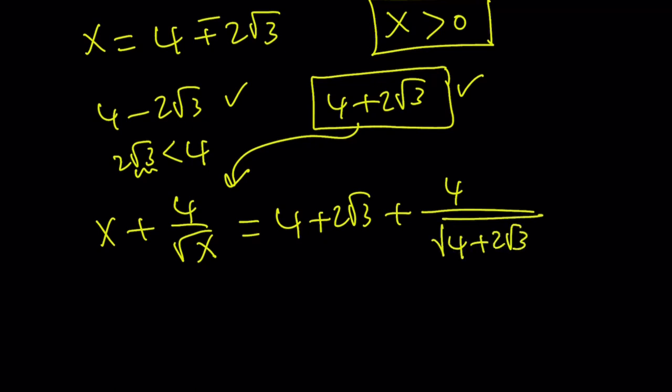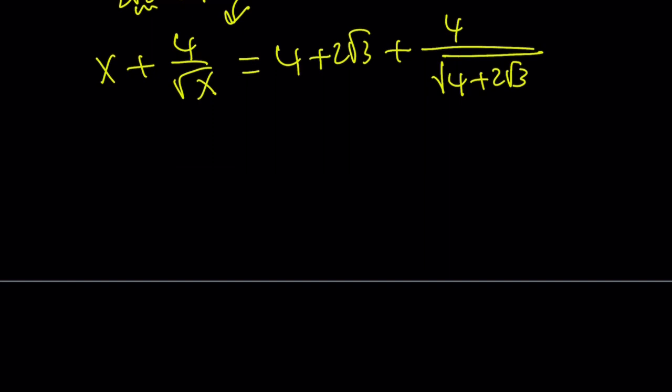Now, you have to take the square root of 4 plus 2 root 3. That's not too hard, especially if you know that you can find two numbers whose product is 3 and whose sum is 4, and those numbers are 3 and 1. So this can be easily written as the square root of 3 plus 1. Now, why does that happen? Because if you square root 3 plus 1, you get 4 plus 2 root 3.